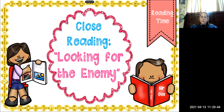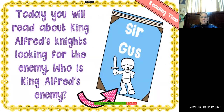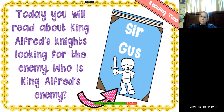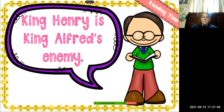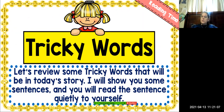We are going to read the story today looking for the enemy. We're going to read about King Alfred's knights looking for the enemy. Who is King Alfred's enemy? It's King Henry — King Henry is King Alfred's enemy. We are going to review some tricky words that are going to be in today's story, and I'm going to show you some sentences.